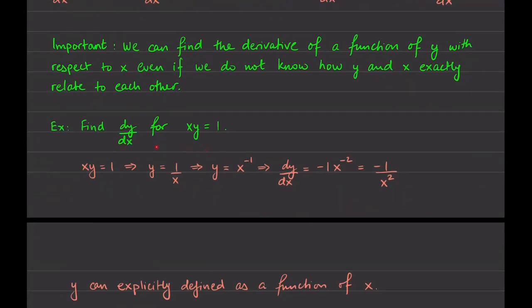Here's a question we should know how to handle from before: find dy/dx, so find the derivative of y with respect to x — how much is y changing by if we change x ever so slightly? The function given is xy equals 1. I can divide both sides by x and rewrite this as y equals 1 over x, or x to the negative 1, and then find the derivative. Using the power rule: bring down the power, subtract 1, and that gives us negative x to the negative 2, or negative 1 over x squared.